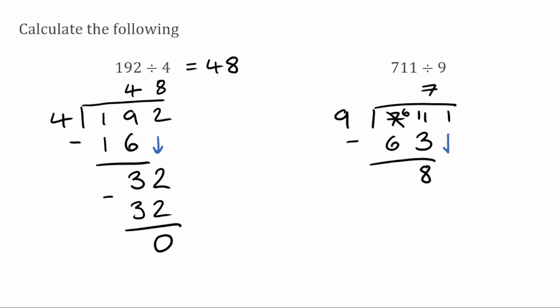So now I'm going to bring down my next digit, which is a 1. So now we've got 81. We want to see how many times does 9 fit into 81. Well, it'll fit in 9 times because 9 times 9 is 81. So when we subtract it, we end up with 0, leaving us with no remainder. So we know our answer to 711 divided by 9 is 79.